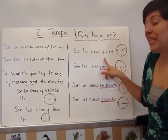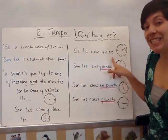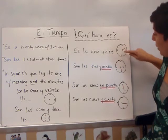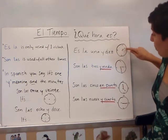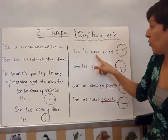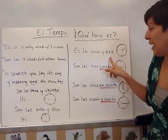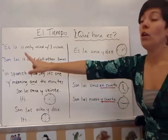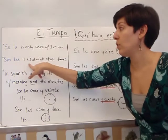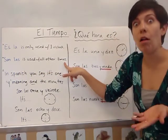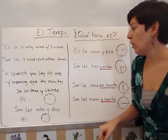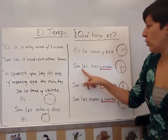So you would say, 'es la una y diez.' Looking at our little clock here, we've got the little hand pointing to the one and the big hand pointing to the ten, so that means it is 1:10. Es la una y diez. Your other way to start it is 'son las.' Son las is used with all other times, because all other numbers are plural, and son las is plural.